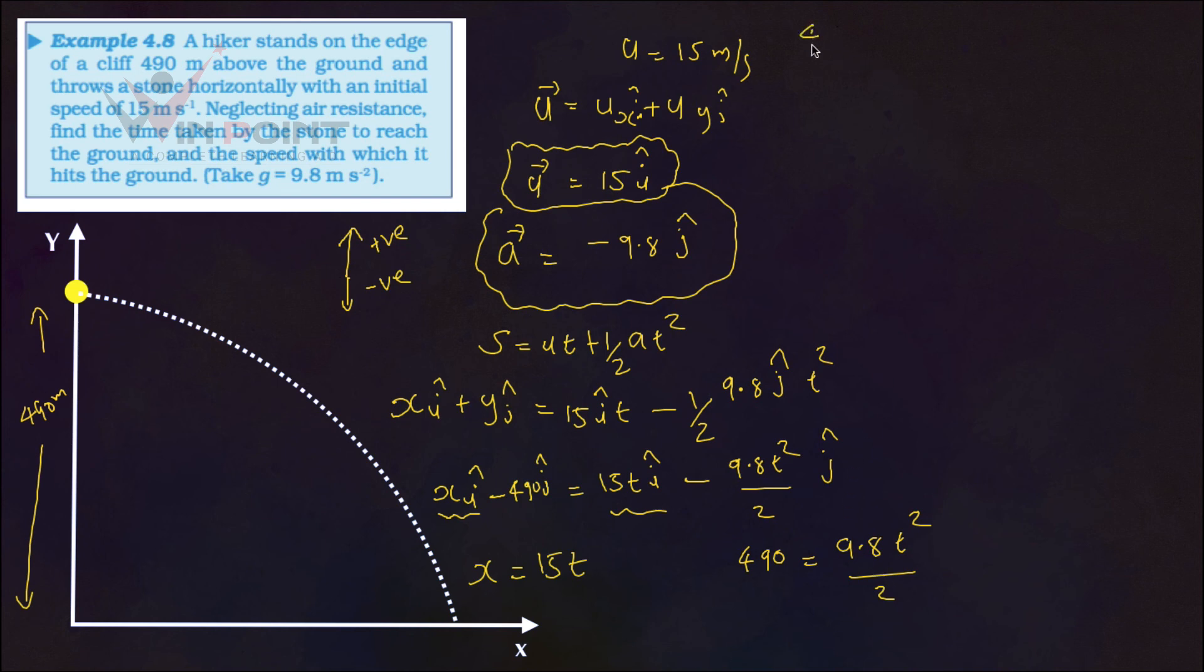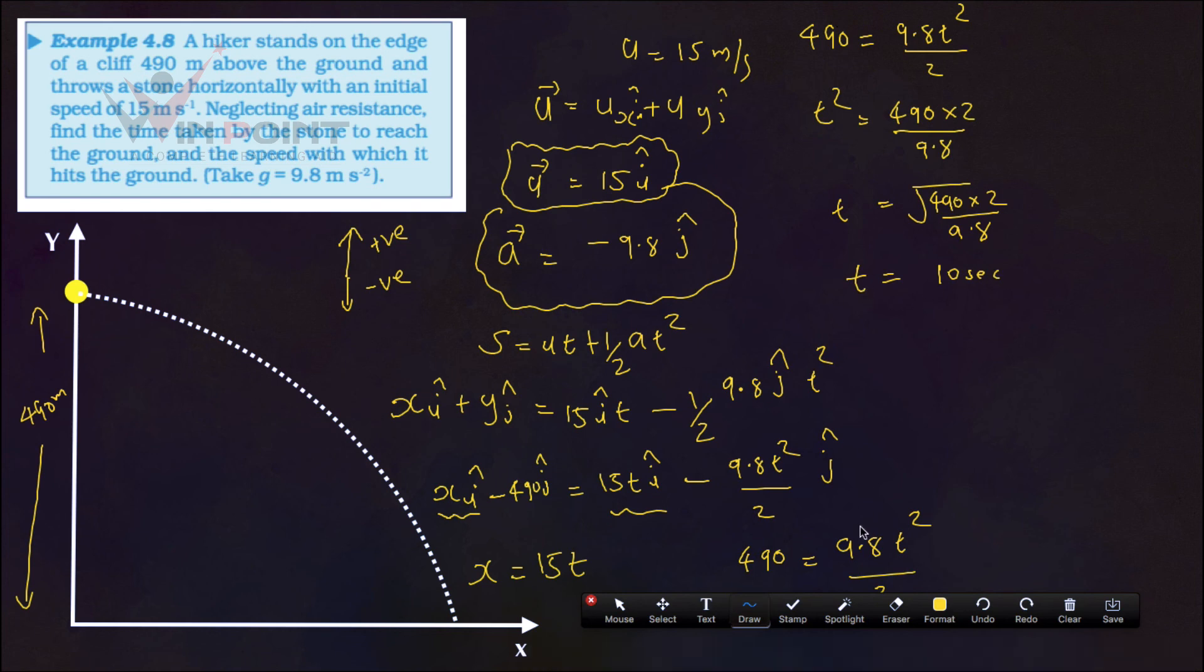490 equals 9.8 T square by 2. From here, I can write T square equals 490 into 2 by 9.8. Then, T will be equal to root of 490 into 2 divided by 9.8. We got the time. We got the value of time.